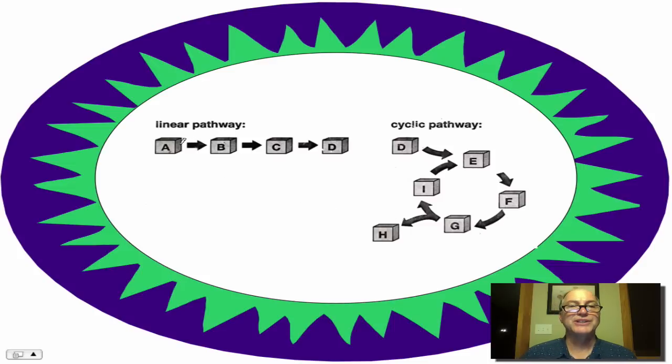Now, some pathways are linear. The purpose is to convert A, that was a nutrient, into D, and that's what the cell needs and uses. But sometimes we have a cyclic pathway in which D is converted to E by an enzyme, and that's converted to F and G. And now, two different enzymes may work on G. One enzyme may convert it into this molecule H. A different enzyme may convert it into I, which can be also reconverted back into E, so the cycle can continue. And we'll see examples of that in the Krebs cycle when we get to cellular respiration.